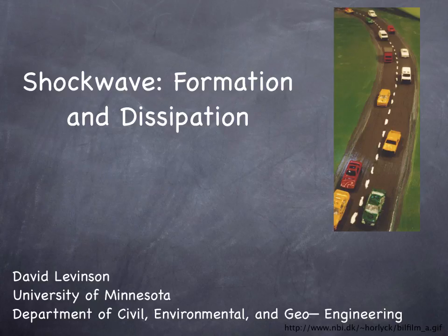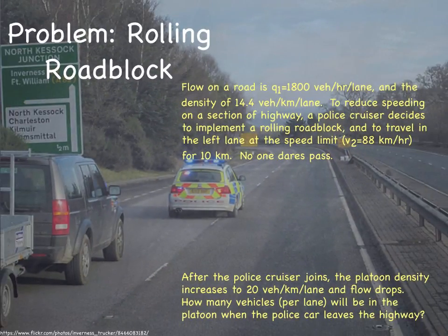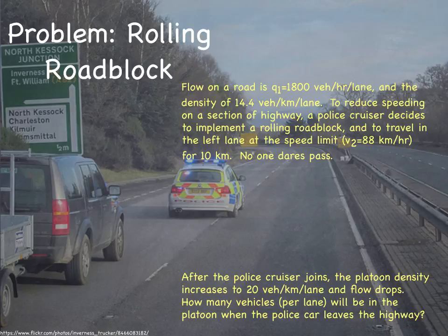In this video, we work through an example on shockwave formation and dissipation. In this case, we're looking at a rolling roadblock. There are different examples of rolling roadblocks. This example uses a police car, but it could be a funeral procession, farm equipment moving slowly on a road, a bicyclist taking the lane where passing is not possible, or a scientific experiment. A Berkeley professor once had two students drive at the speed limit in parallel across a long bridge so that he could observe the consequences in reality.